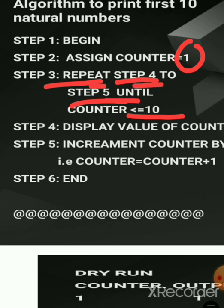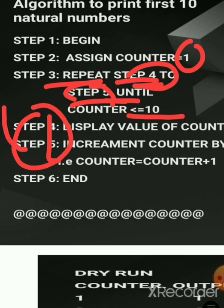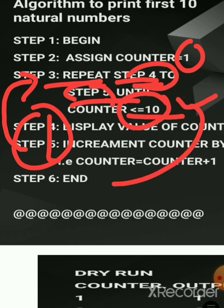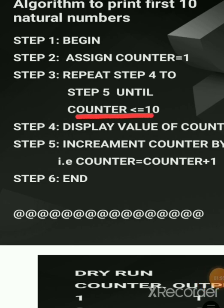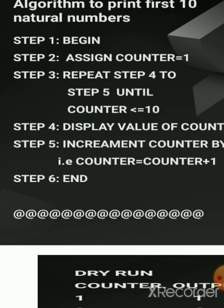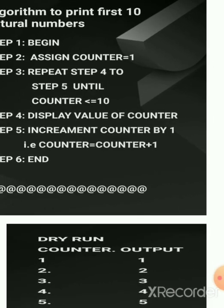In the third step, we write repeat steps four and five. Steps four and five will get executed again and again until the counter becomes 11. When it becomes 11, it will come out of these steps. It checks: if counter is less than or equal to 10, yes — counter is initially one — so it will display the value of counter.